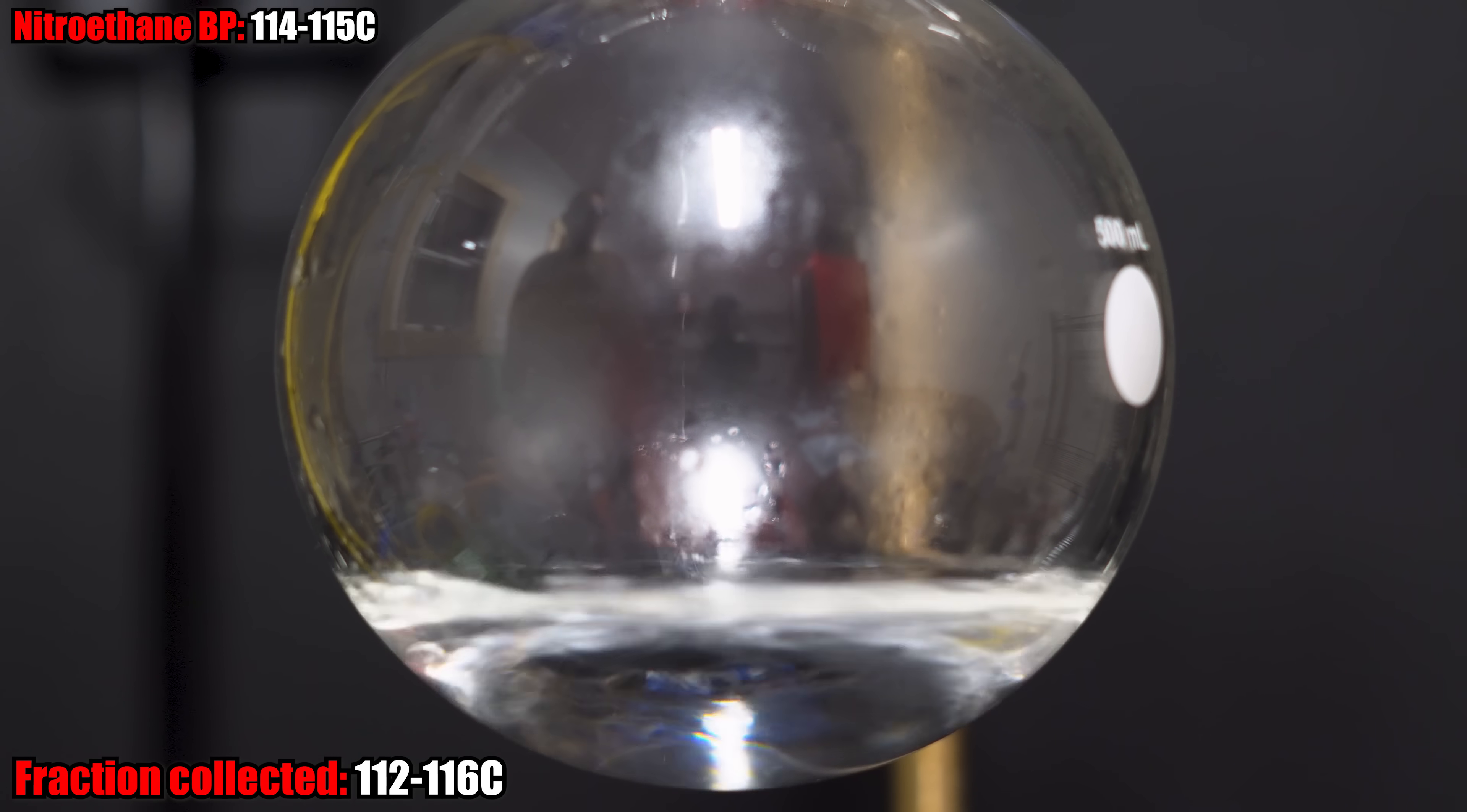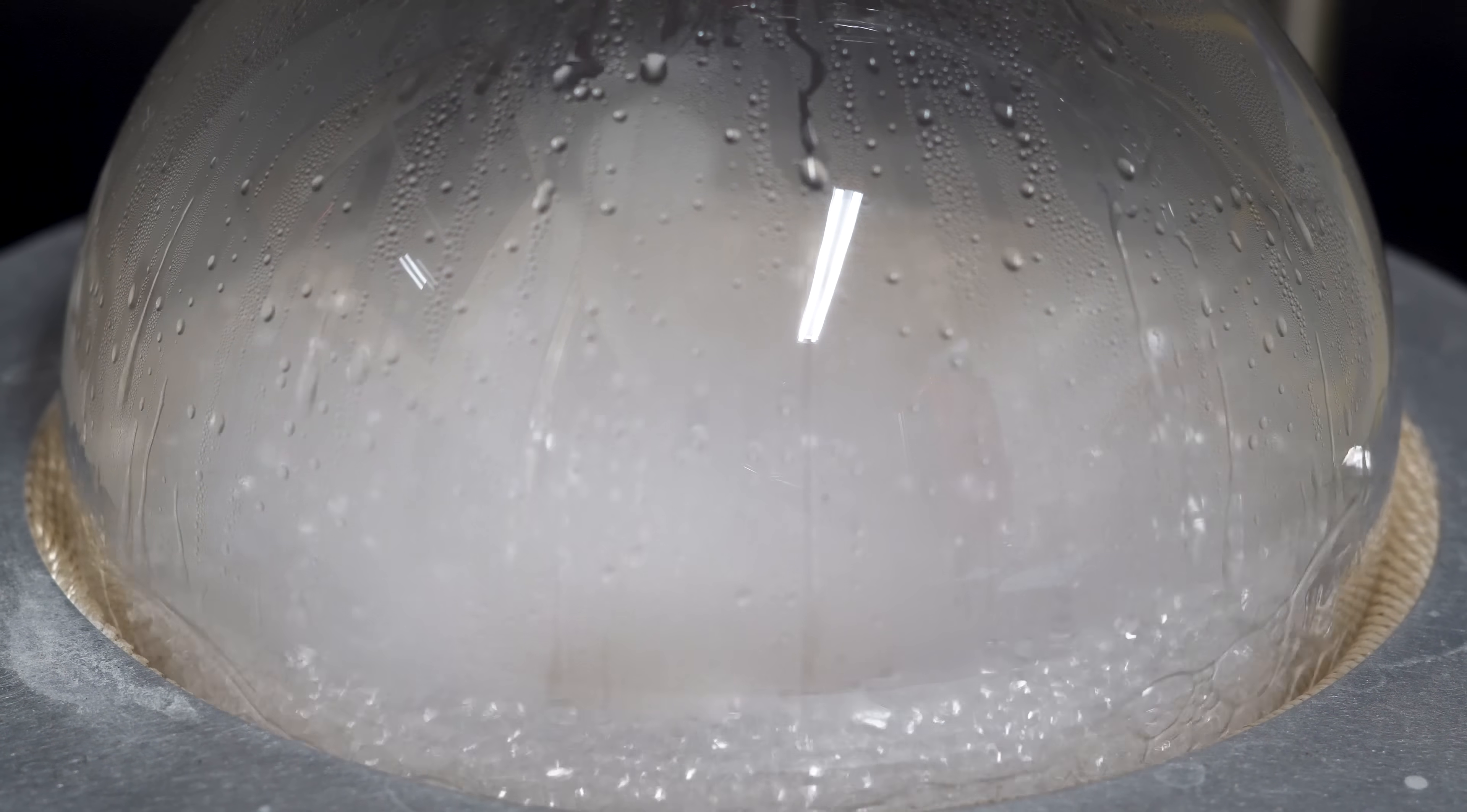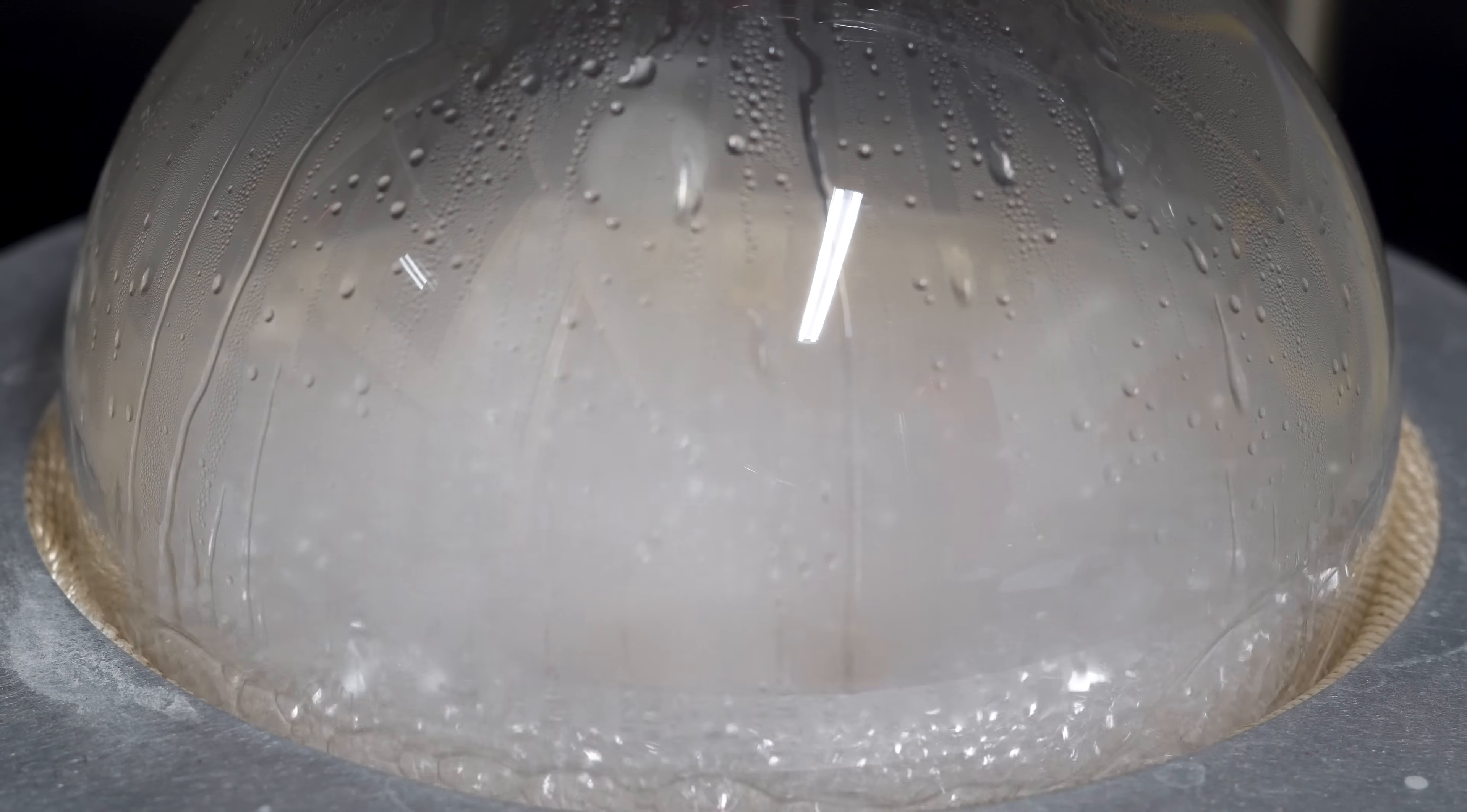Now, like I said before, it is only 1-5% of the butan-1-ol, but it still matters. Frothing did start to increase as the distillation was coming to an end. However, it didn't present any issues, and it stayed in the flask.